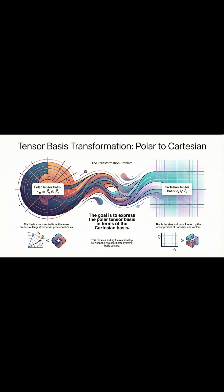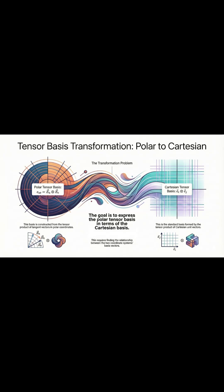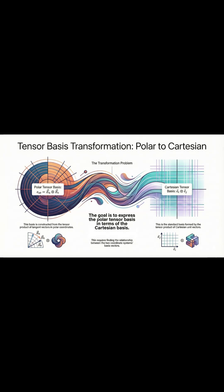And finally, the whole point is to connect this new, rotating tensor basis back to our original, familiar Cartesian system. This step is the crucial link. It lets us do all our fancy calculations in the rotating system, but then translate the answer back to a fixed frame we can actually make sense of.